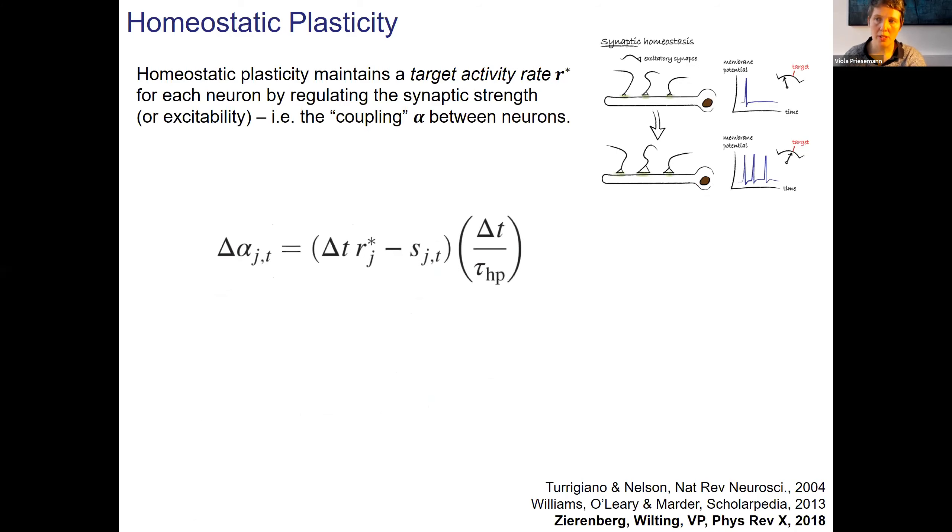Let me briefly show these analytical results. Take homeostatic plasticity. Homeostatic plasticity has a goal so that every single neuron maintains the internal activation rate R. Here's a sketch by Yves Marder. If the excitatory synaptic strengths are too weak, then the rate of the neuron is too low. It isn't as high as the target should be. So one increases the excitatory synaptic strength. The rate goes up and then the neuron reaches target rate. That is a self-regulation mechanism.